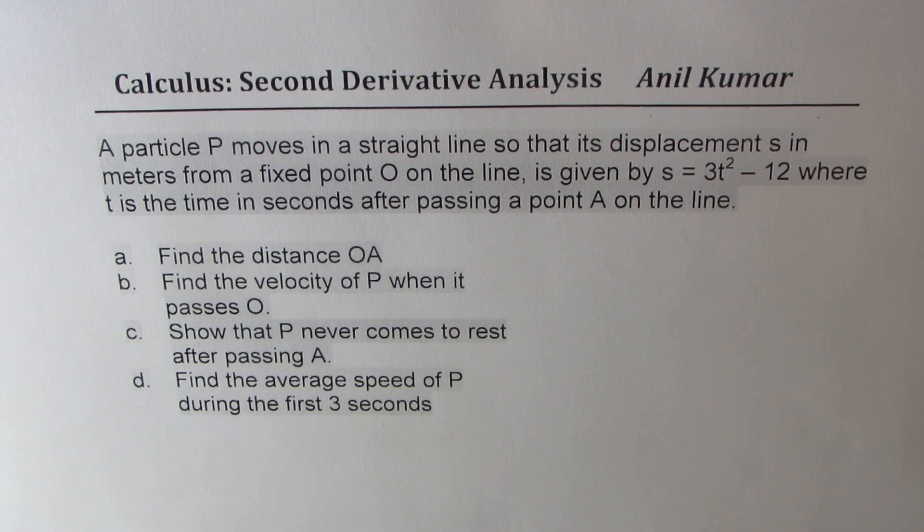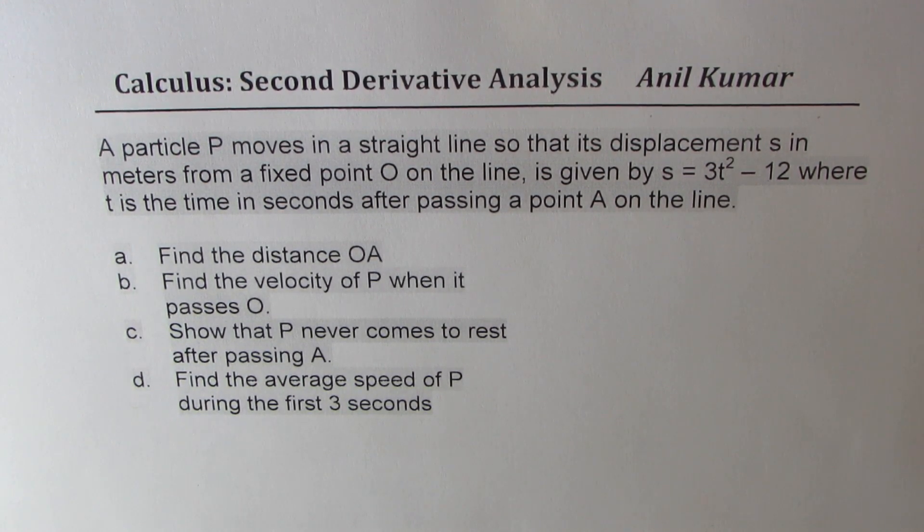I'm Anil Kumar. Let me first thank my subscriber Arum for posting few excellent questions and I hope their solution will help many others. The question here is, a particle P moves in a straight line so that its displacement s in meters from a fixed point O on the line is given by s equals 3t squared minus 12 where t is the time in seconds after passing a point A on the line. So let's first understand the question itself.